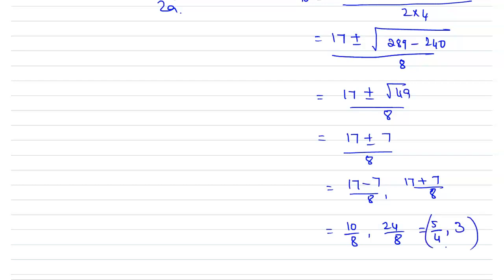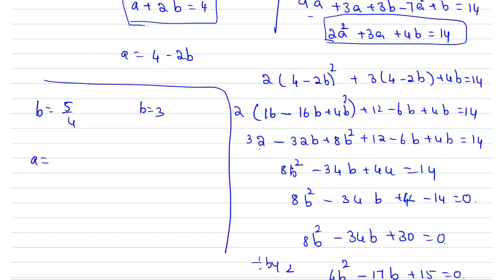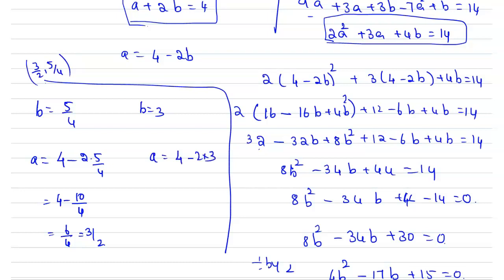So the two values of b are 5/4 and 3. Taking b = 5/4: a = 4 - 2(5/4) = 4 - 10/4 = 6/4 = 3/2. So one solution is (a, b) = (3/2, 5/4). Taking b = 3: a = 4 - 2(3) = 4 - 6 = -2. Hence the other solution is (a, b) = (-2, 3).